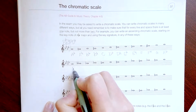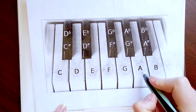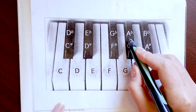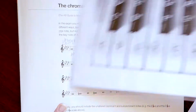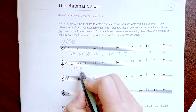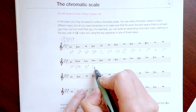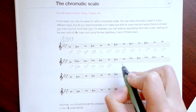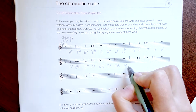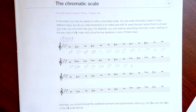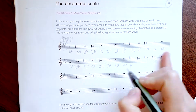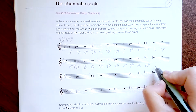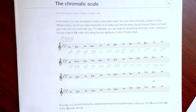The next example again starts from A flat, but we have to check that the next note is B, and it's going to be B double flat. We remember it is harmonically equal to the note A. We continue with raising the notes, but you have to be careful and always move up by the semitone.